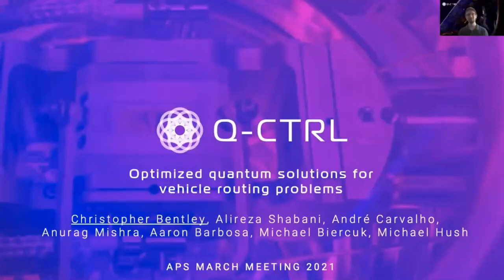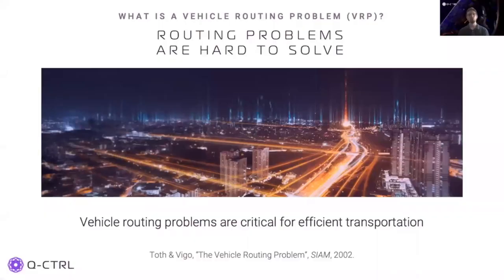Hello, I'm Christopher Bentley, a senior quantum control engineer at Q-Control, and I'll be presenting our work on optimized quantum solutions for vehicle routing problems. We rely on transportation for our work, leisure, food and medicine supply, and the infrastructure of society. The efficiency of transportation directly impacts our well-being. Providing an efficient transport network relies on solving optimization problems including staff and vehicle scheduling, logistics planning, and operational management of traffic. A key example is the vehicle routing problem, or VRP, which is about the optimal paths and timing of vehicles traveling around a transport network to meet particular travel or supply requirements.